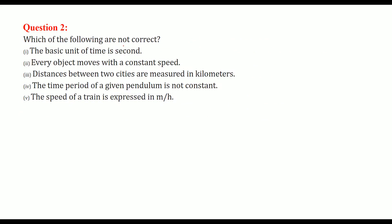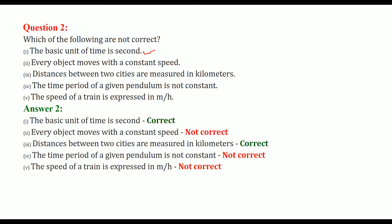Which of the following are not correct? The basic unit of time is second — this is correct. Every object moves with a constant speed — no, this is not correct. Distances between two cities are measured in kilometers — yes. The time period of a given pendulum is not constant — this is not correct; it has to be constant. A speed of a train is expressed in meter per hour — no, it should be kilometer per hour.